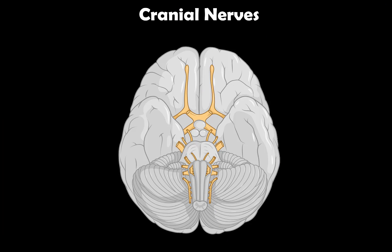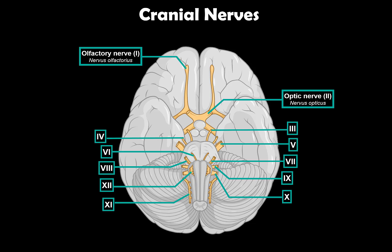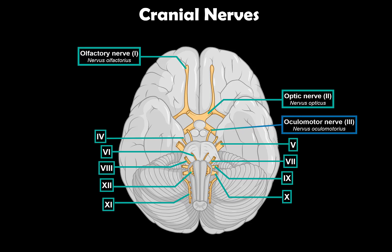What's up? TimeTalksMed here. Let's continue our cranial nerve series. Cranial nerves are 12 pairs of nerves that exit the brain and the brainstem. In this segment, we will talk in detail about the third cranial nerve, which is the oculomotor nerve.